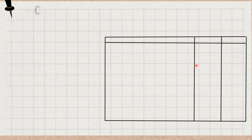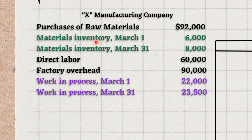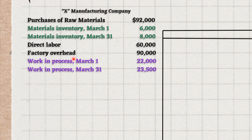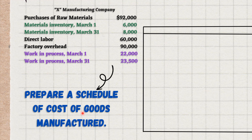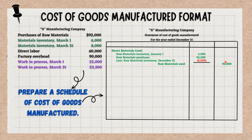Now let's see an example. We have some information about Techs Manufacturing Company and we have to prepare a schedule of the cost of goods manufactured. As we have done earlier, we will write the name and headings of the company, then create a box with two columns for writing amounts. In the question we have two inventories of raw materials and a purchase of raw materials. We will write the beginning one, add the purchase, and deduct the ending one. These give us the raw materials used of $90,000.